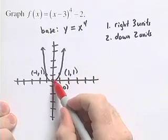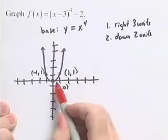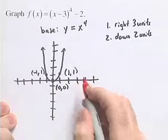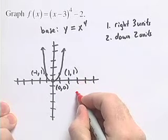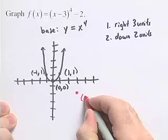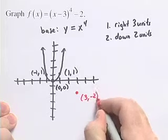So we'll start with the origin 0, 0. We go right 3 units, 1, 2, 3, down 2 units, and we're at the point 3, negative 2.